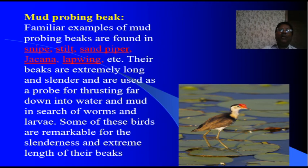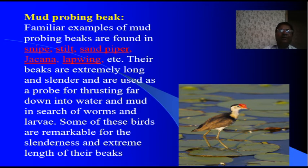Mud-probing beak — familiar examples of this type are snipe, stilt and piper, jacana, etc. Their beaks are extremely long and slender and are used as a probe for thrusting far down into water and mud in search of worms and larvae. Some of these birds are remarkable for the slenderness and extreme length of their beaks.